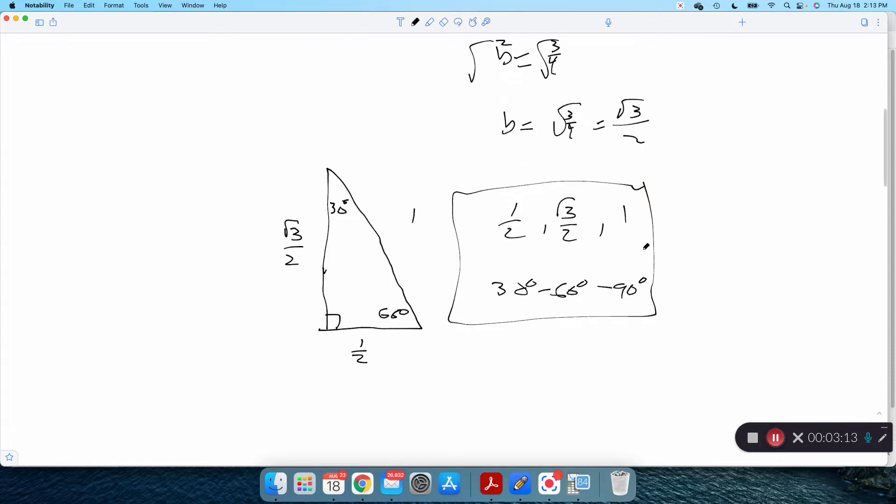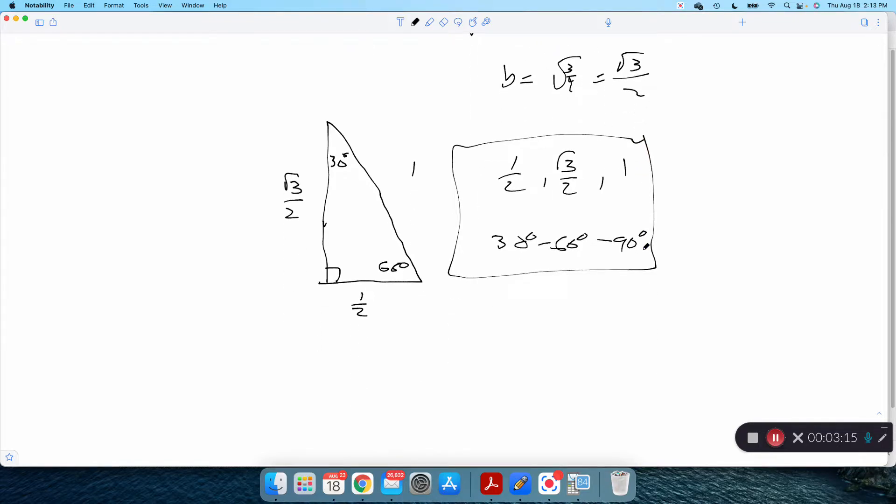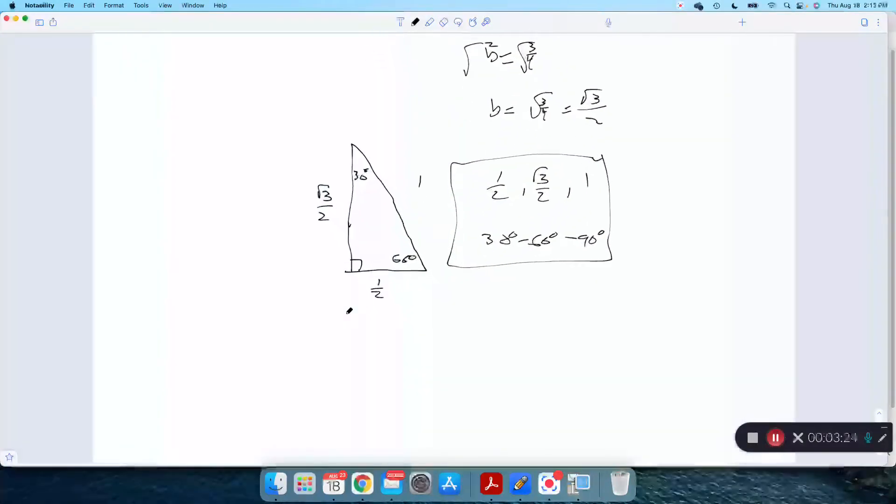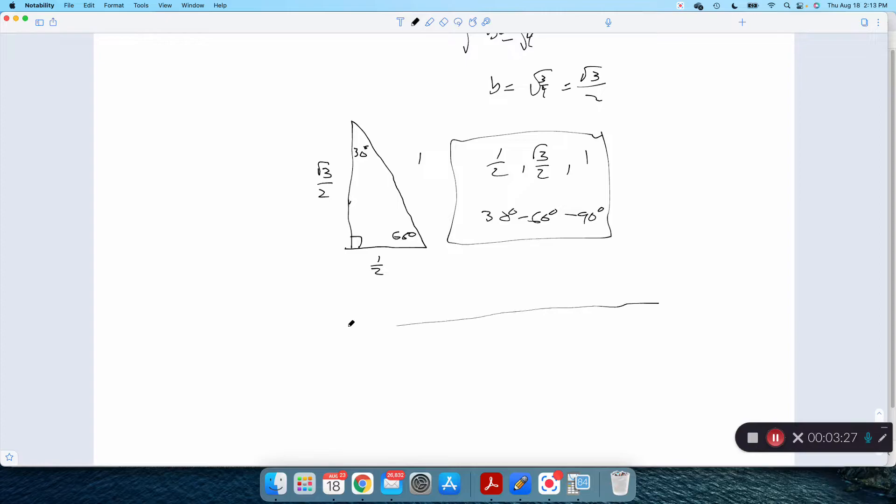Or, something I like to do, because it gets rid of some of these fractions. Let's just double all of these lengths. If I make this triangle twice as big, it's still the same triangle. It's still proportional. So I could just double everything, multiply all the sides by 2. There's 30, there's 60, and there's my 90. And I could say 1, root 3, 2. And you could check that. I just doubled all three of those.